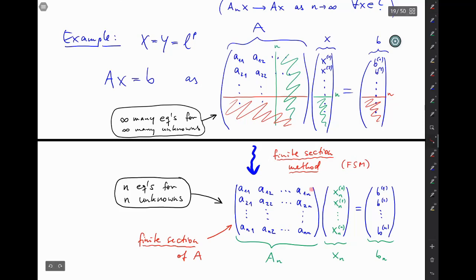Looking at this, it seems perfectly clear that An is a finite rank operator. It's just a finite matrix, you can store it on a computer, no problem.